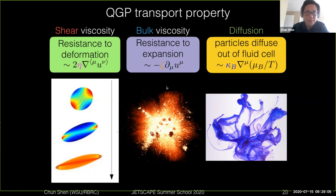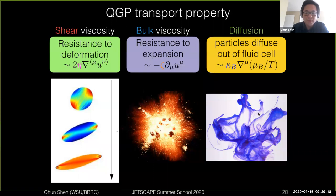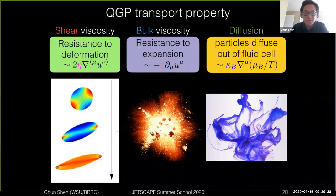For bulk viscosity, you can think of it as a resistance to global radial expansion — it will slow down the flow expansion due to velocity gradients. Diffusion of particles is controlled by the gradients of chemical potentials, and you can describe how a conserved charge moves outside the fluid cell via diffusion currents.